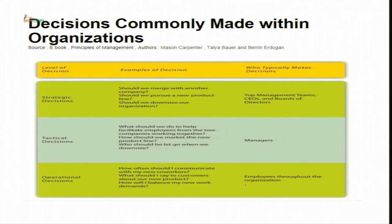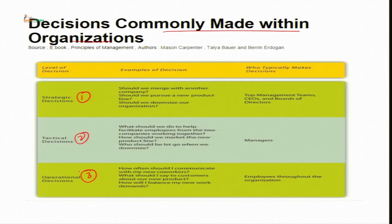Now let us discuss the decisions commonly made in organizations. There are three types: strategic decisions, tactical decisions and operative decisions. Examples of strategic decisions include whether to merge with another company, whether to pursue a new product line, or whether to downsize the organization. These decisions are generally taken by top management — CEOs and board of directors — who may adopt different styles of decision making.